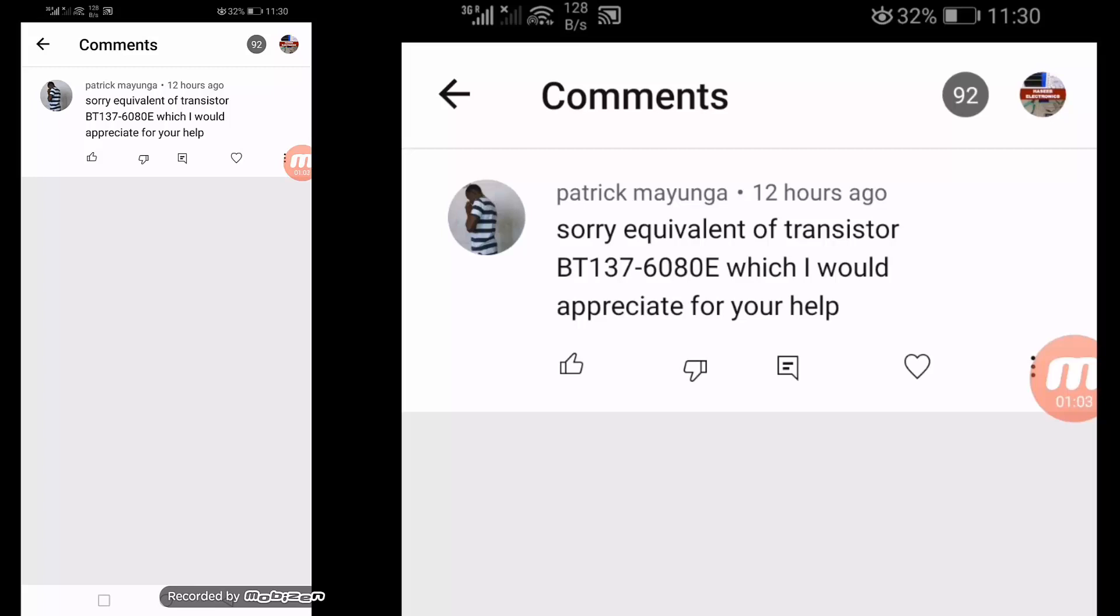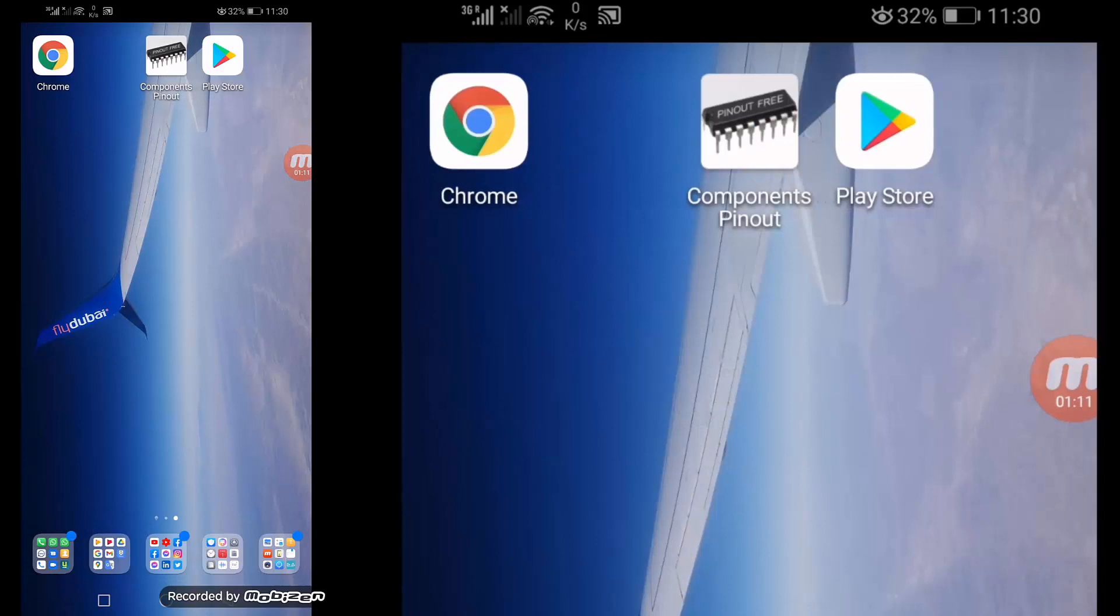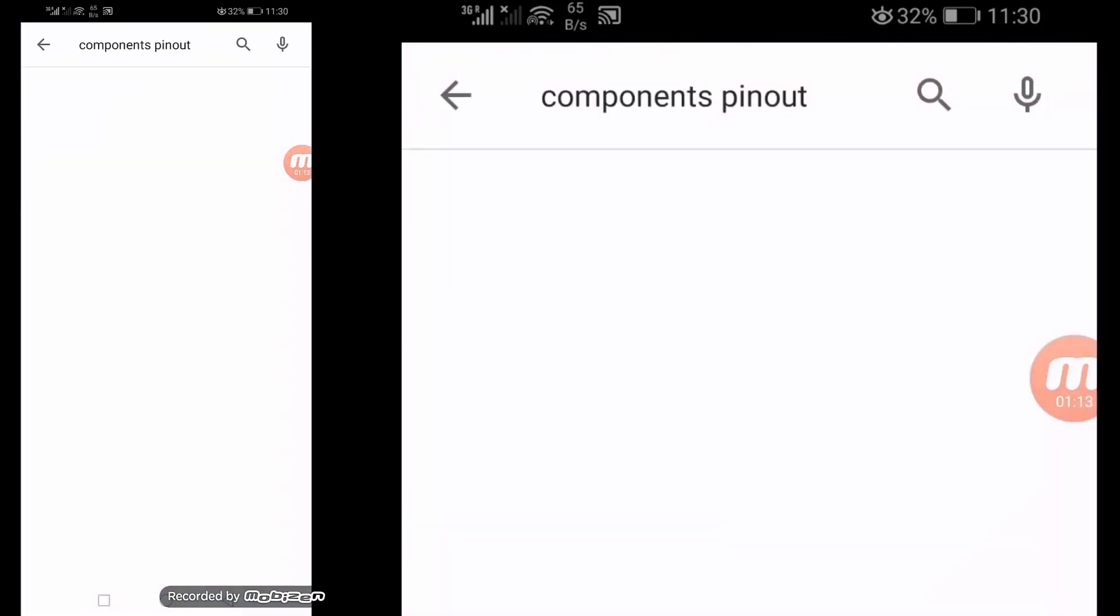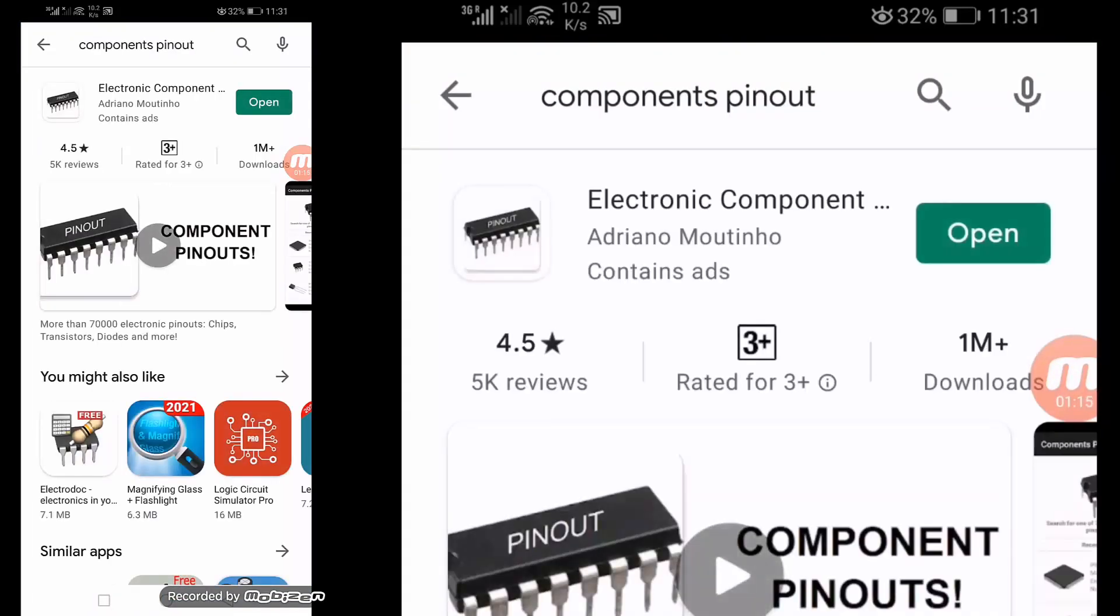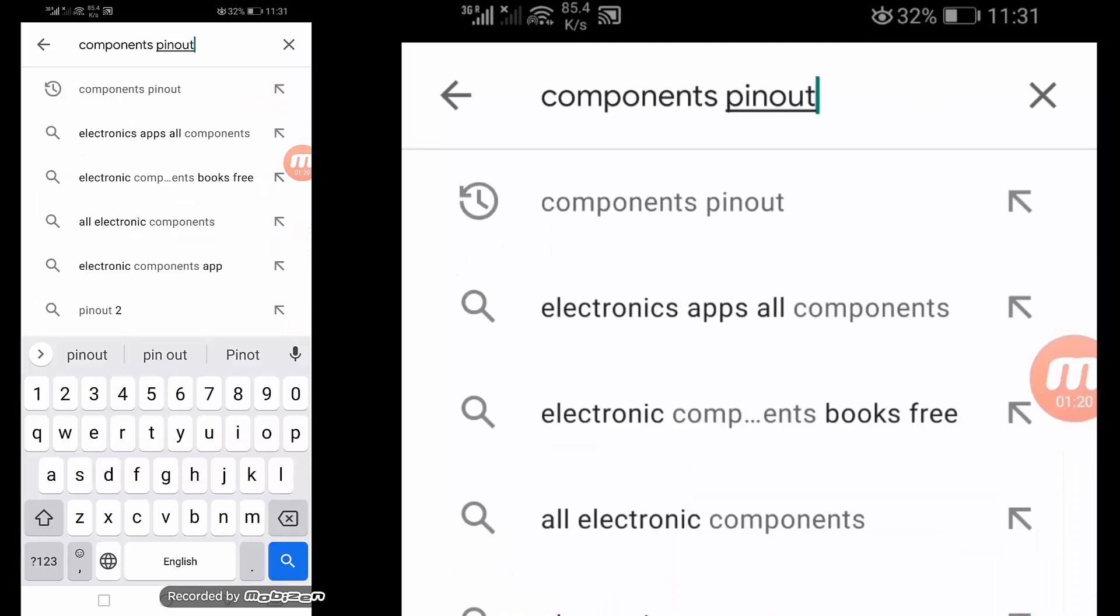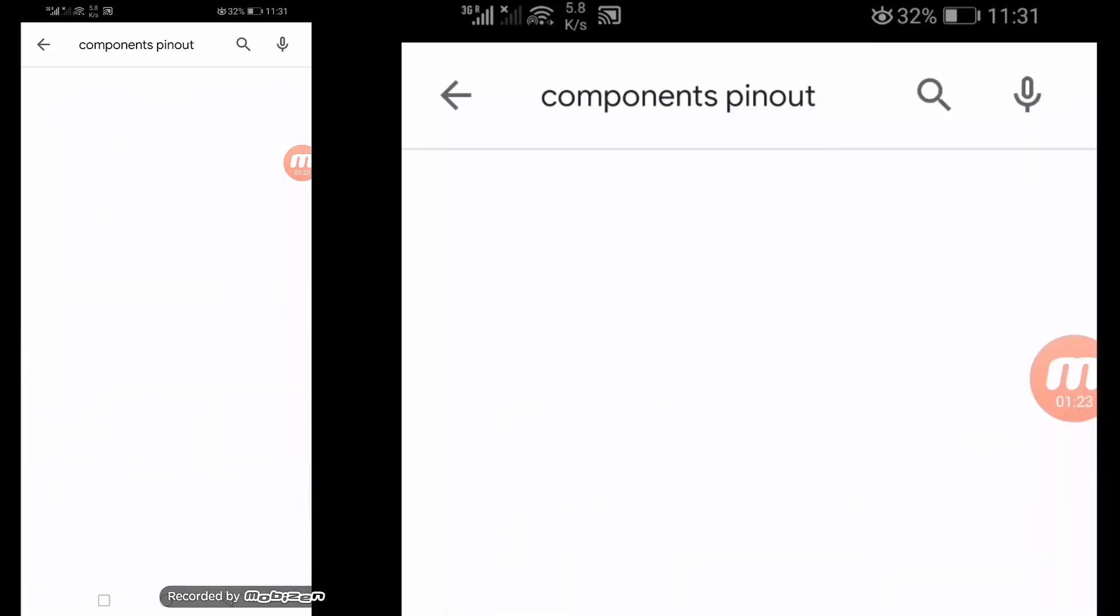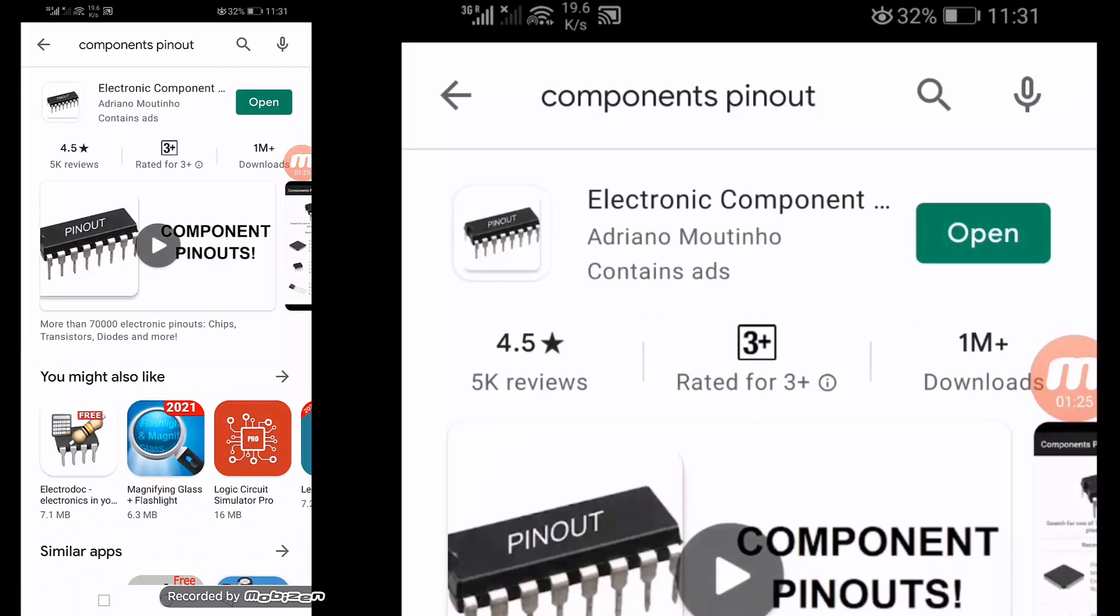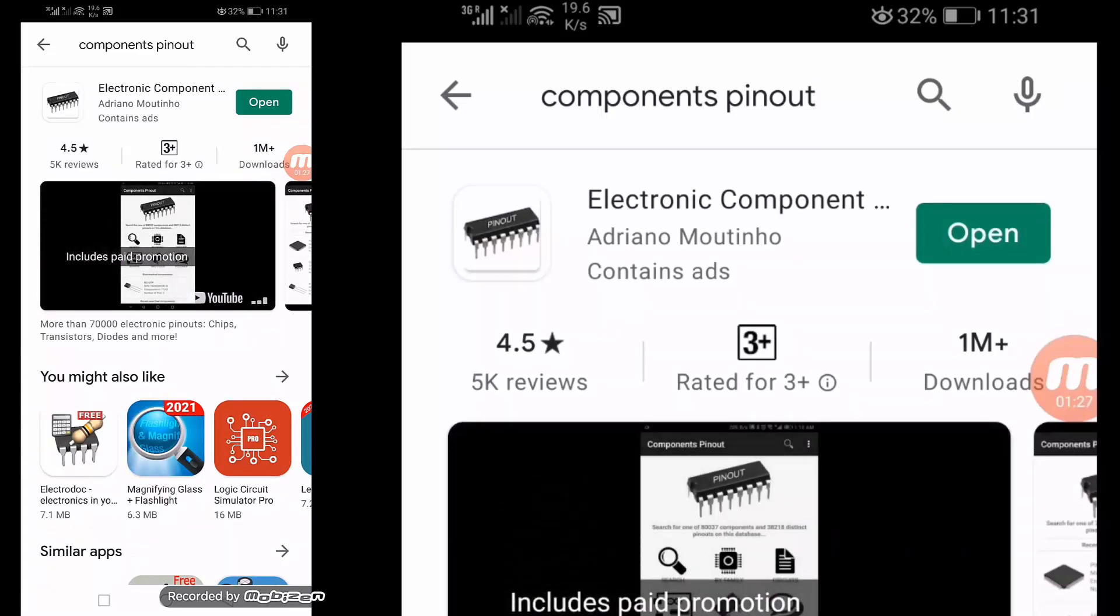It is not 6080E, it is 137. Its actual part number is BT137-600E, which I would appreciate for your help. Okay, let's see. First of all, go to Play Store if you are a mobile user. Here, search for the application Component Pin Out and install it.